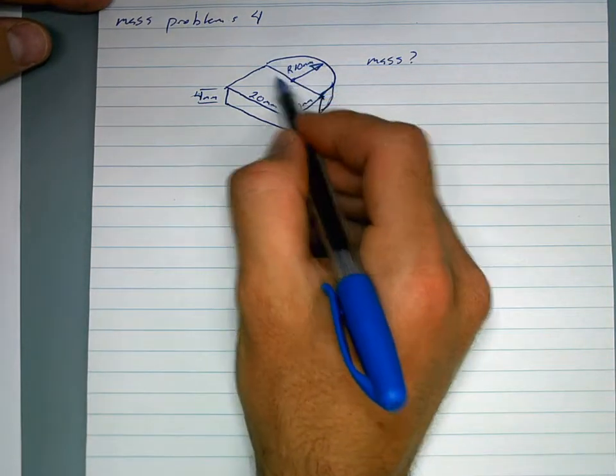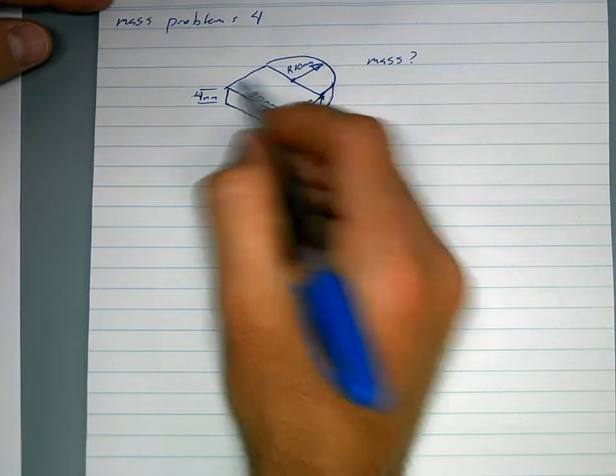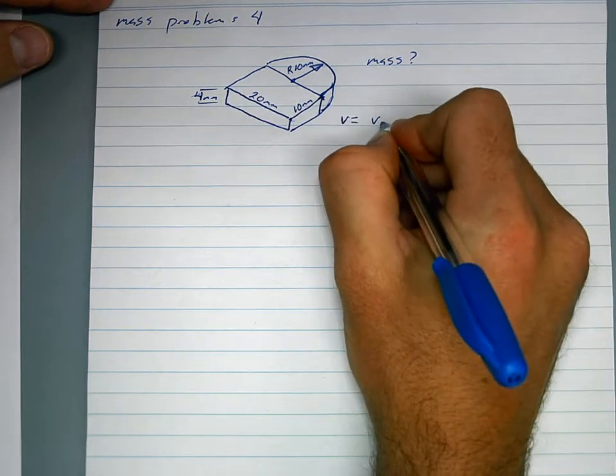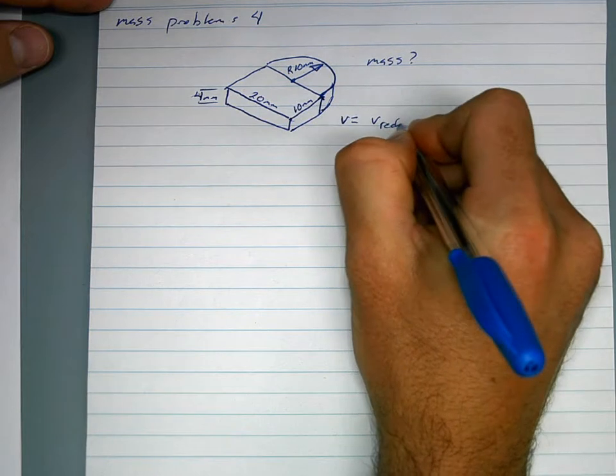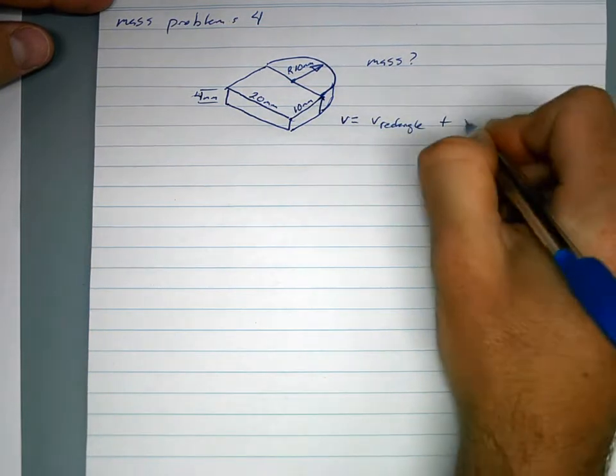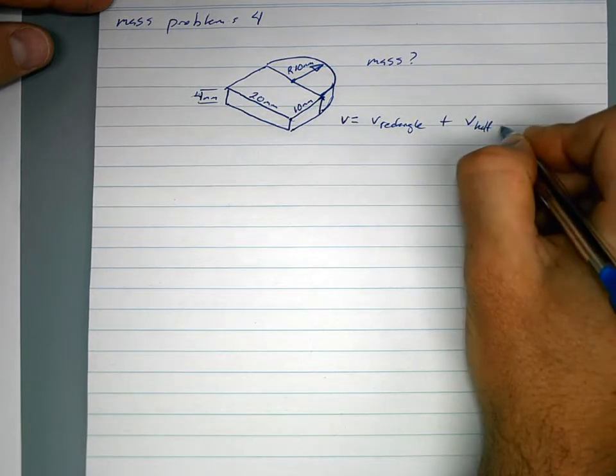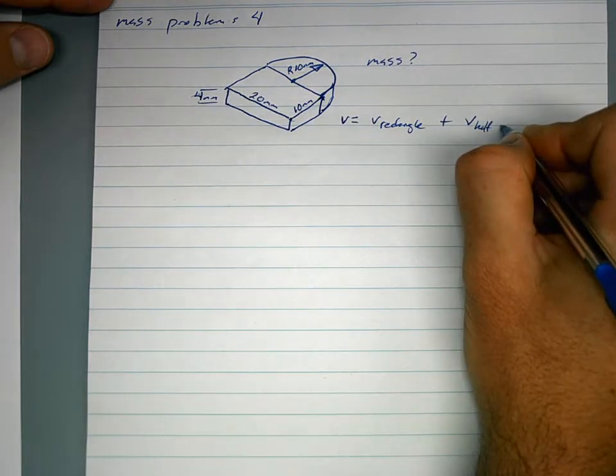So you've got half a cylinder and you've got a square. So volume would equal the volume of the rectangle plus the volume of a half sphere.